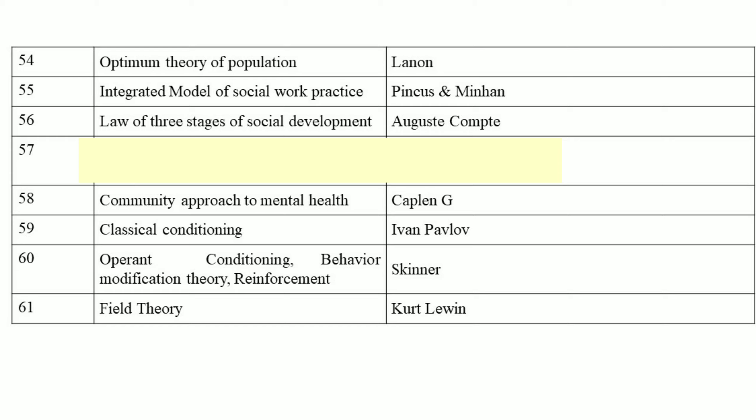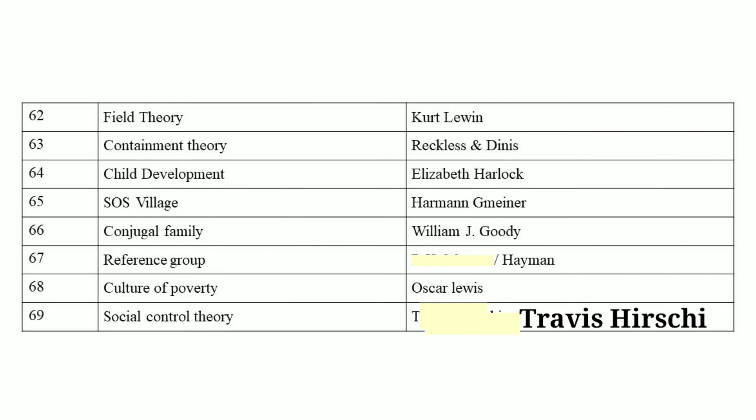Field theory was put forward by Kurt Lewin. Containment theory proposed by Reckless. Child development by Elizabeth Hurlock. SOS Village by Herman Minor. Conjugal family by William J. Goode. Reference group — the term was given by Hyman.